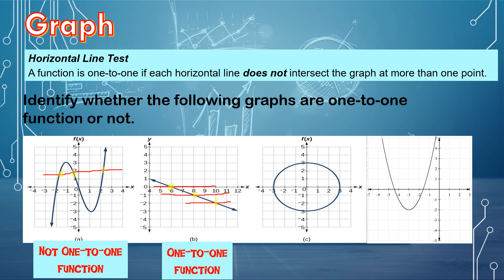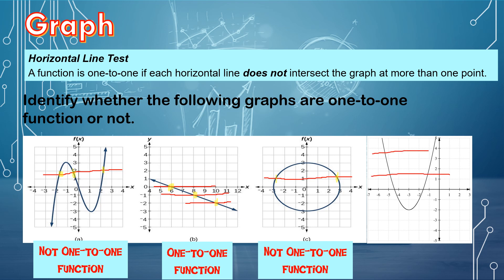For the third figure, drawing a horizontal line, there are two points intersected by the horizontal line — one and two. Therefore, this graph is not a one-to-one function. For the last graph, drawing a horizontal line anywhere on the graph, there are two points intersected on one side — one and two. Since it is more than one, therefore this graph is not a one-to-one function.